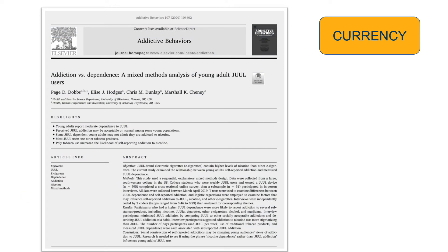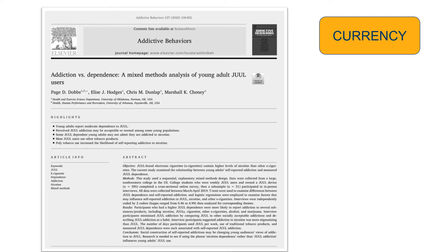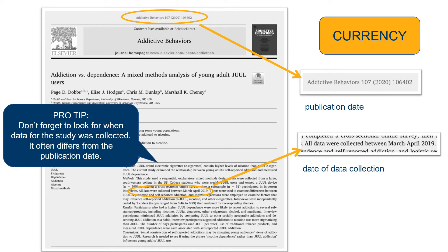The currency, or timeliness, of a source is another important consideration in evaluation. When evaluating a source for currency, think about the appropriate time frame for your topic. Are you working on a topic where you want the most up-to-date information? Would your topic benefit from having a more historical perspective? Remember that currency doesn't just involve the publication date of a source — look more carefully at your source to determine when the data for the study was gathered. This can generally be found under the methodology section of a scholarly source.